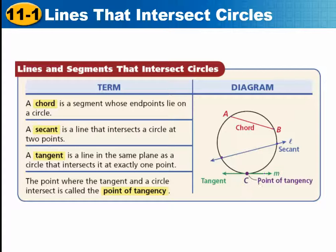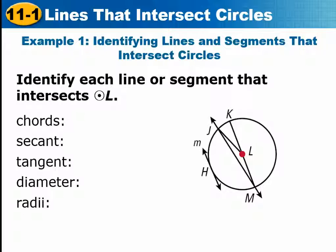A tangent is a line that intersects at just one point, called the point of tangency. And the point, and we already talked about that, that's the point of tangency. So we have chord, secant, and point of tangency and tangent here.